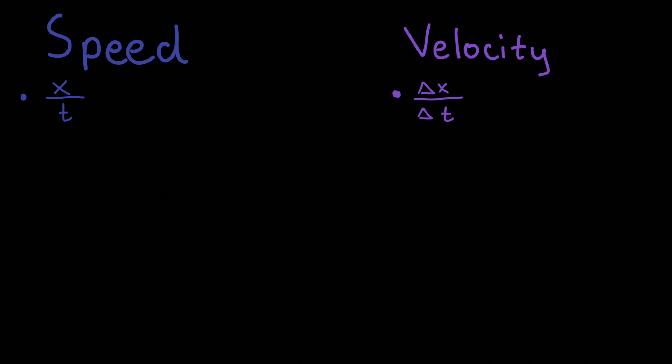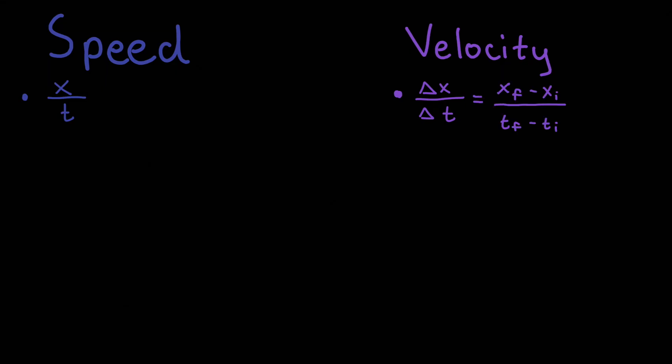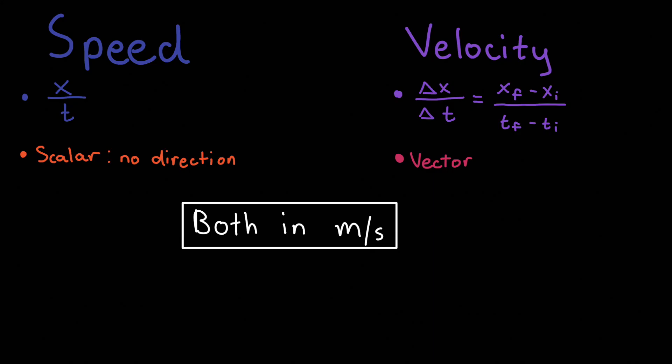Now let's define speed and velocity. Speed is the distance an object is moving over in a given period of time, and velocity is displacement — or change in distance — over a given period of time. This change in distance is always final distance minus initial distance. Anytime you see delta in front of any unit, remember it's final minus initial. The SI units for velocity and speed are meters per second.